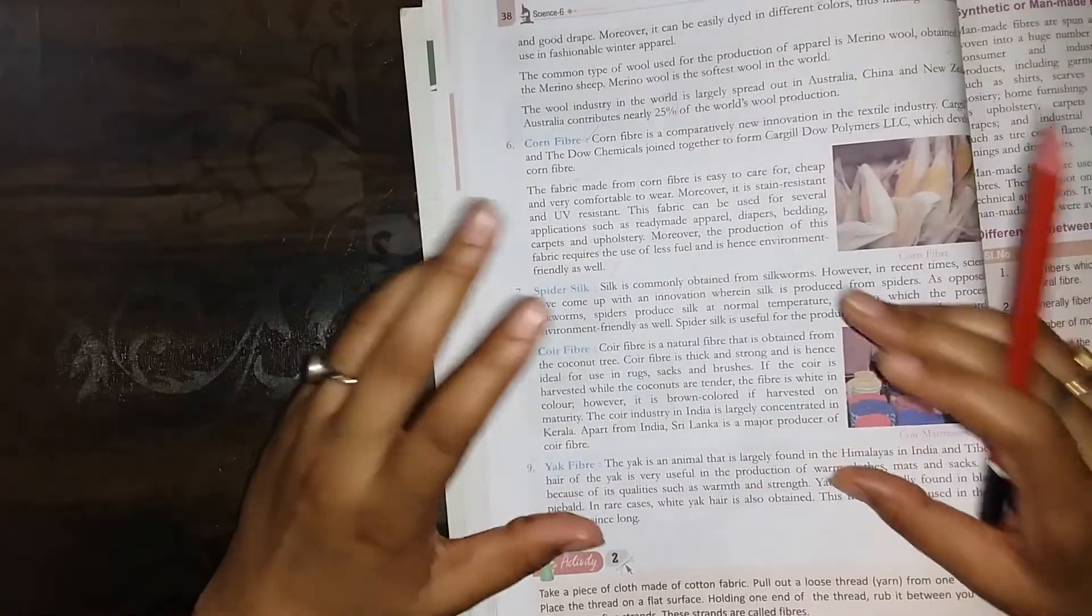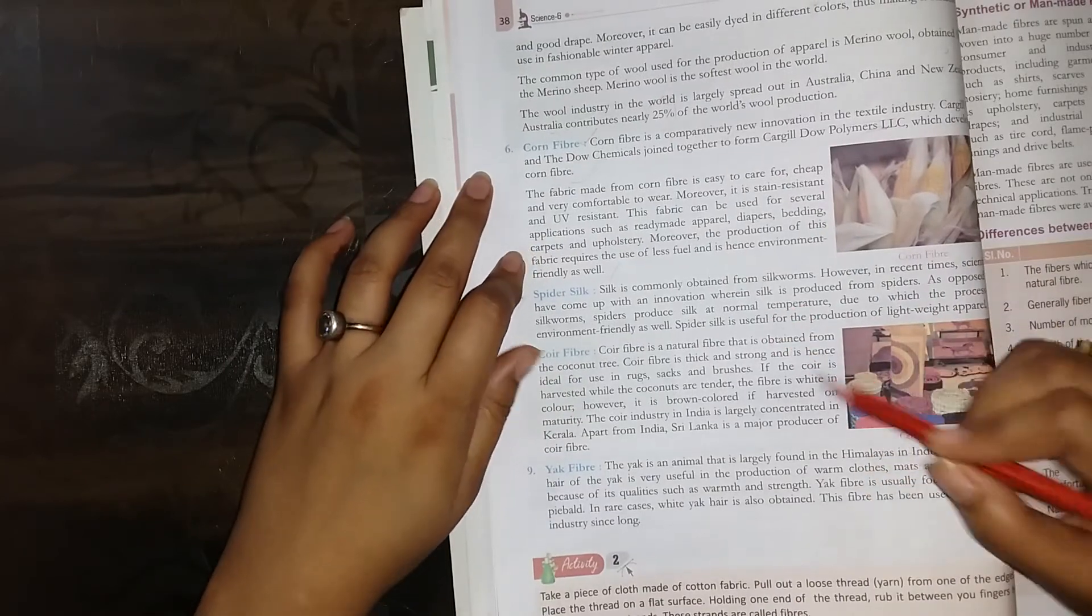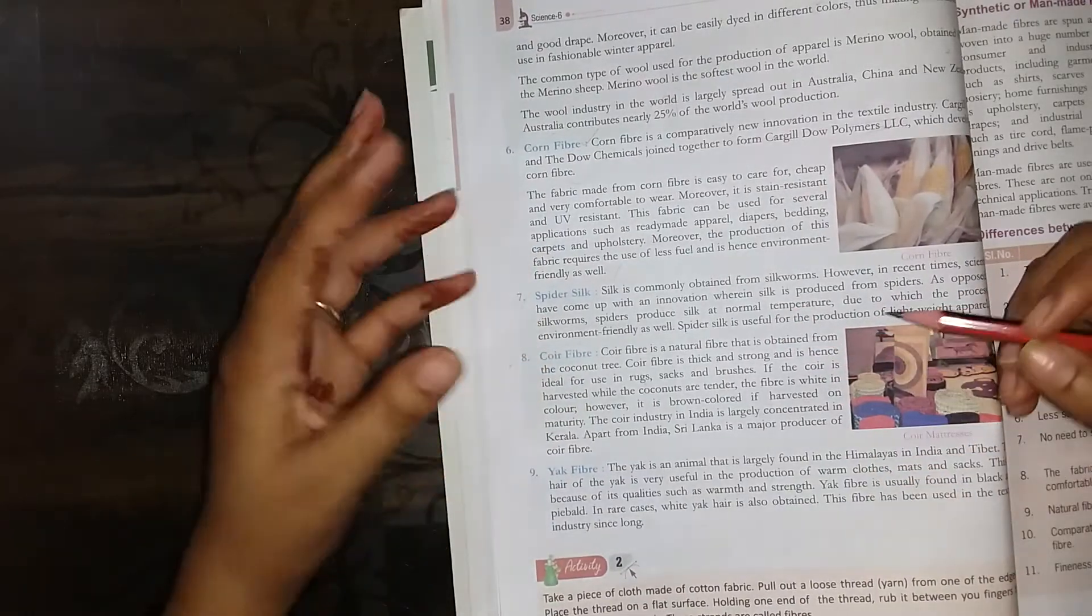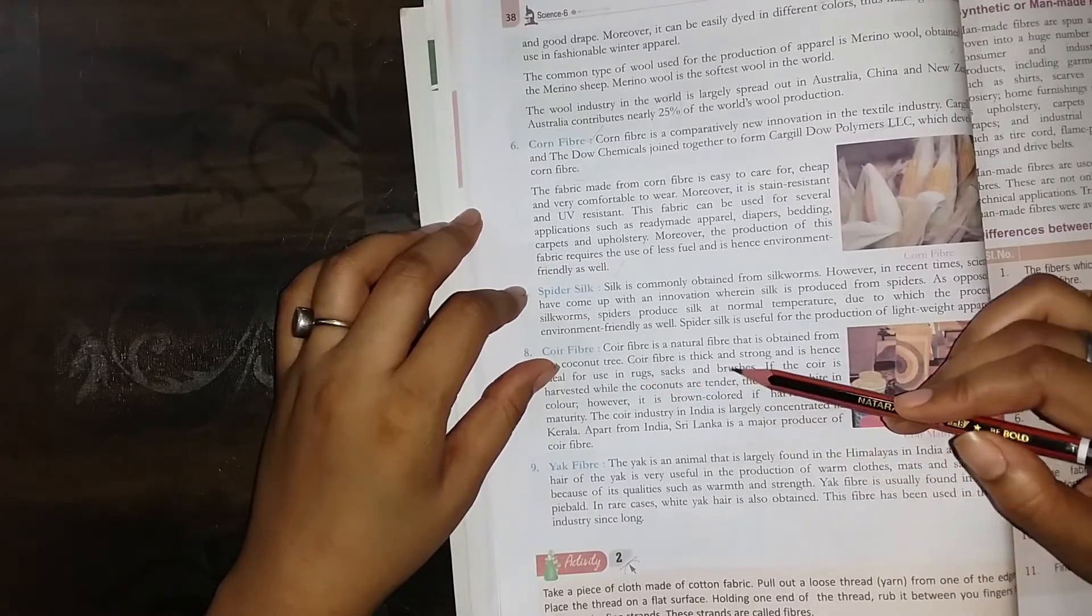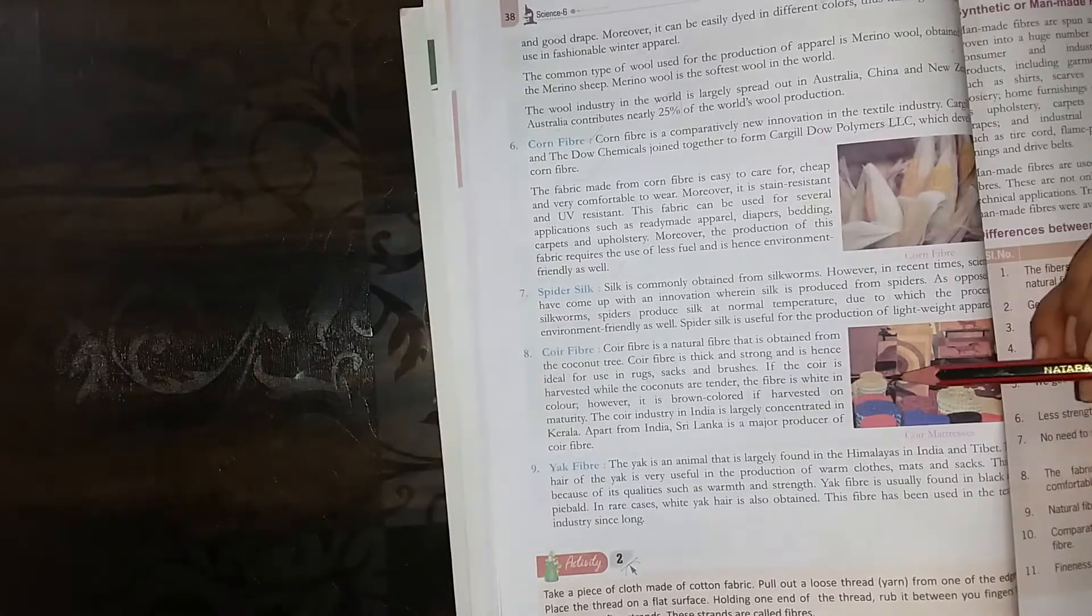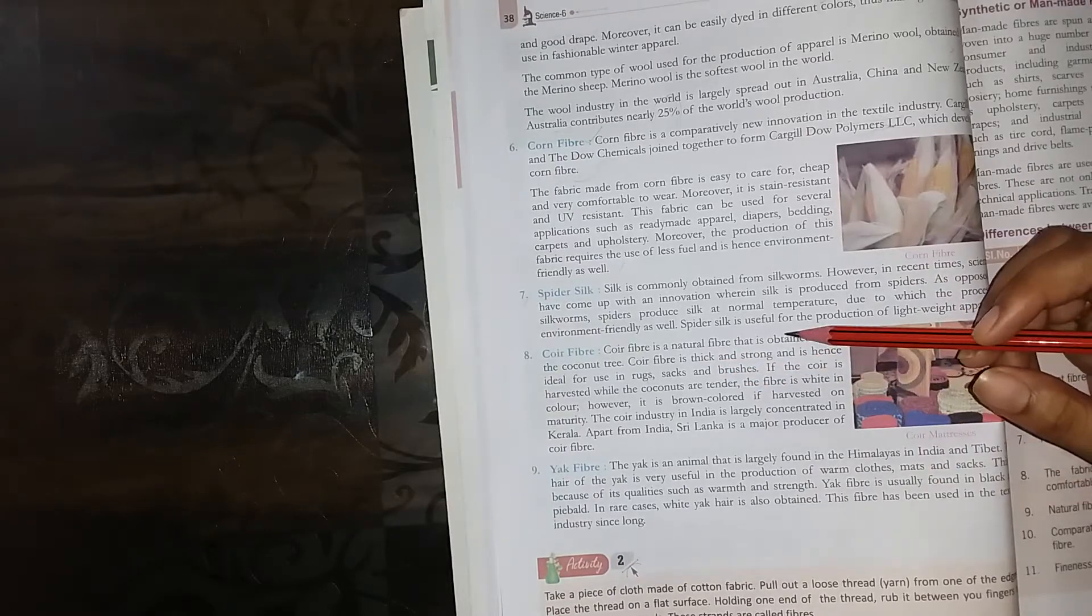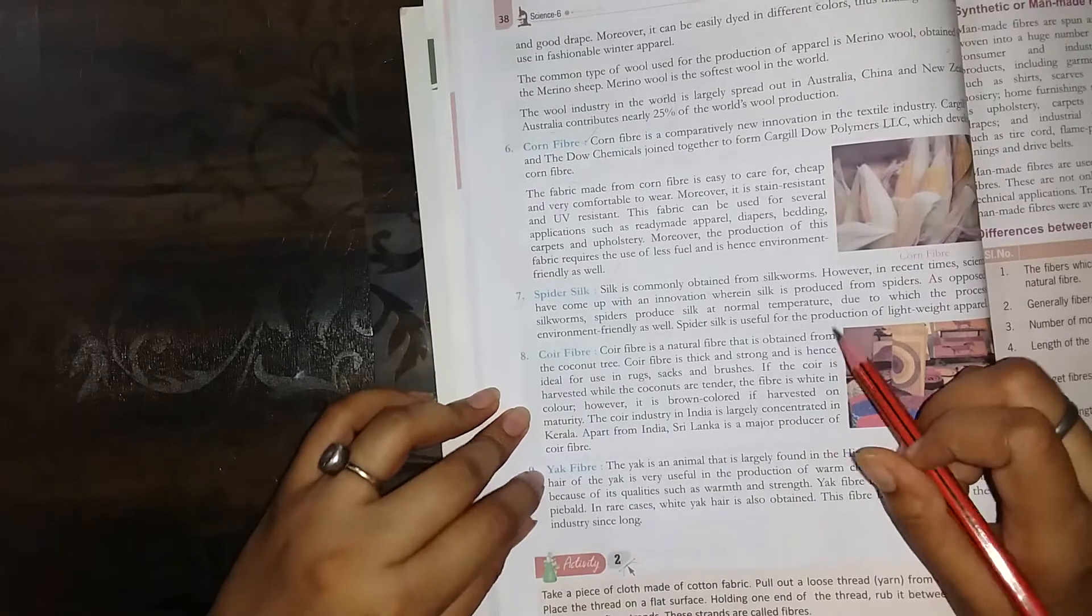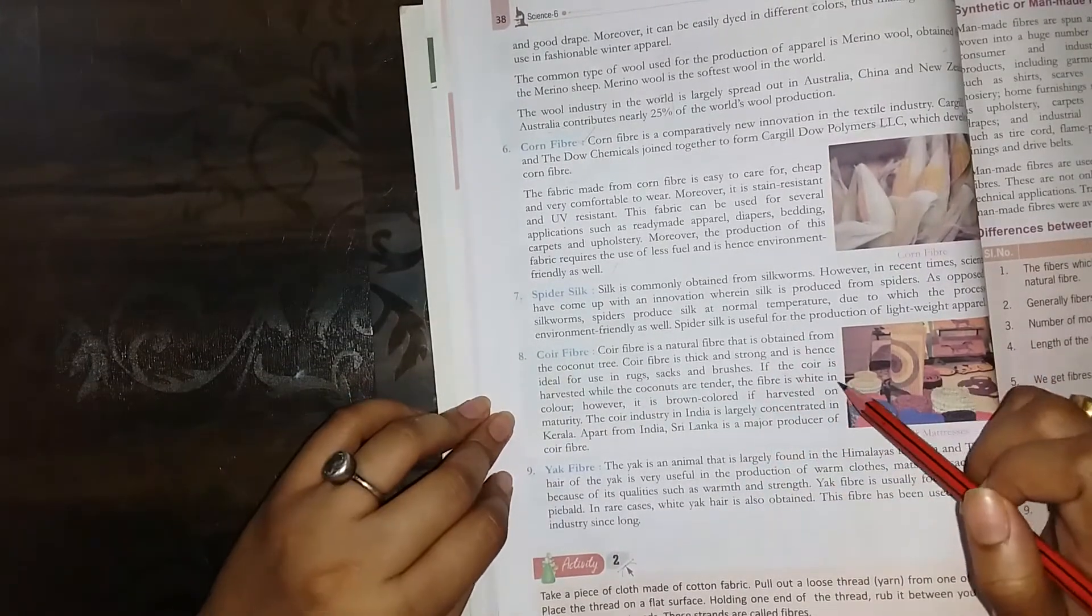The coir fiber is white in color if the coconut is harvested when tender. Tender means soft. When it is soft, the fiber is white. However, it is brown colored if harvested at maturity.